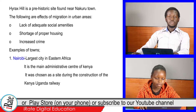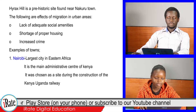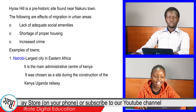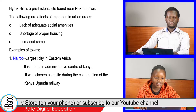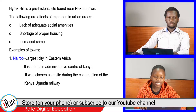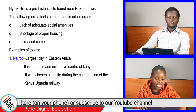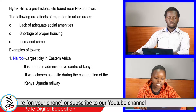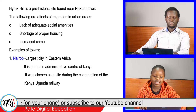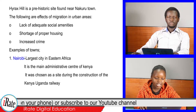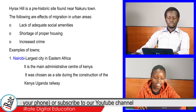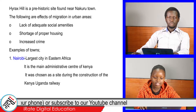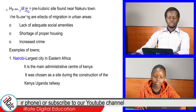Examples of towns. 1. Nairobi — the largest city in Eastern Africa. It is the main administrative center of Kenya. It was chosen as a site during the construction of the Kenya-Uganda Railway.